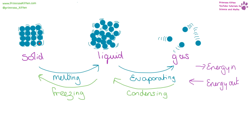Solid particles are in a fixed position — they do vibrate but very slightly and around a fixed position; they do not move around. Liquid particles move around much more — they are still touching each other but are not in a fixed position; they move about randomly in a confined space. Unlike gas, which is free to move and zip around all over the place. If we are putting energy in, we are turning a solid into a liquid or evaporating a liquid into a gas. If energy is coming out, a gas is condensing or a liquid is freezing.